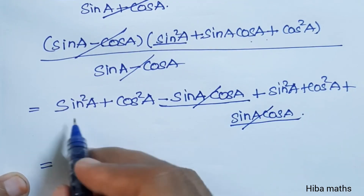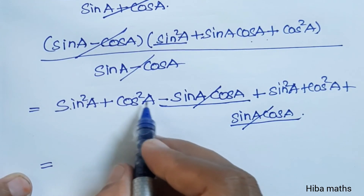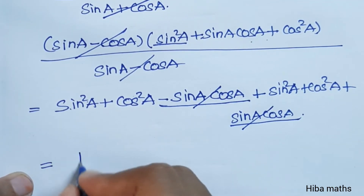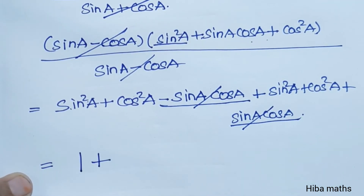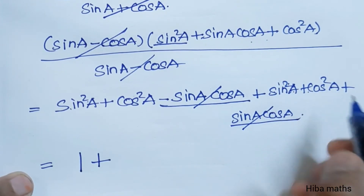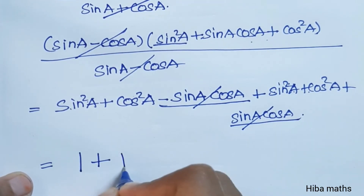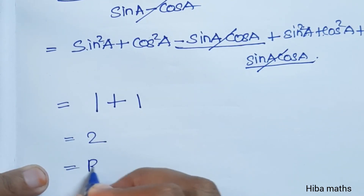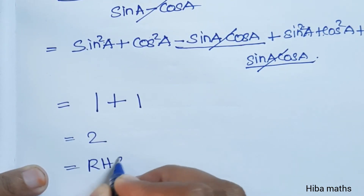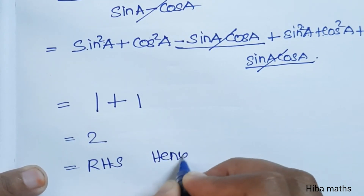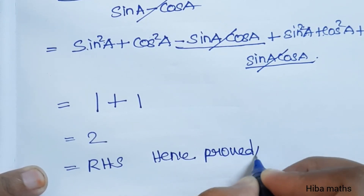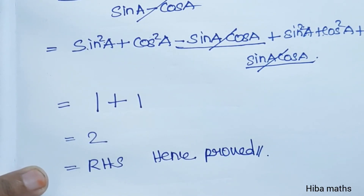The balance is sin squared A plus cos squared A, which equals 1, plus sin squared A plus cos squared A, which again equals 1. So 1 plus 1 equals 2. Hence proved. If you have any doubt, please ask in the comments section and share with your friends. Thank you so much for watching.